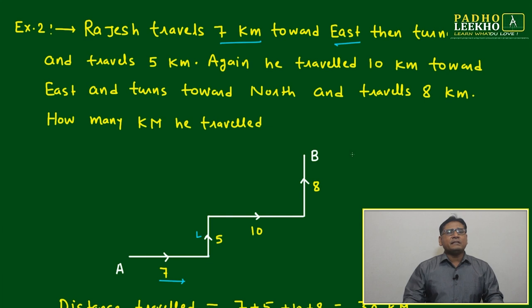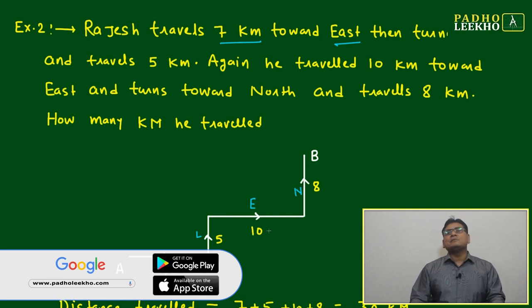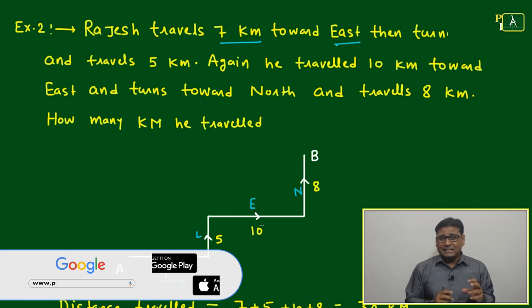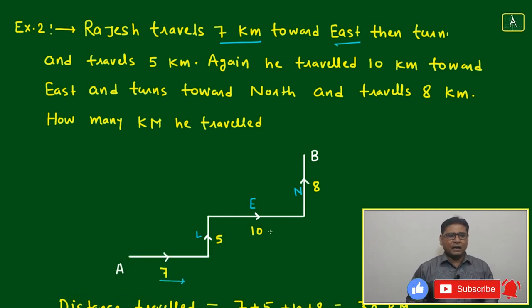Next again he travelled 10 km toward east, 10 km toward east, and turns toward north and travelled 8 km. All the line segments you will find it is relatively measured, not exact, relatively measured just for visual. 10 km looks largest, afterwards 8, then 7, then 5.